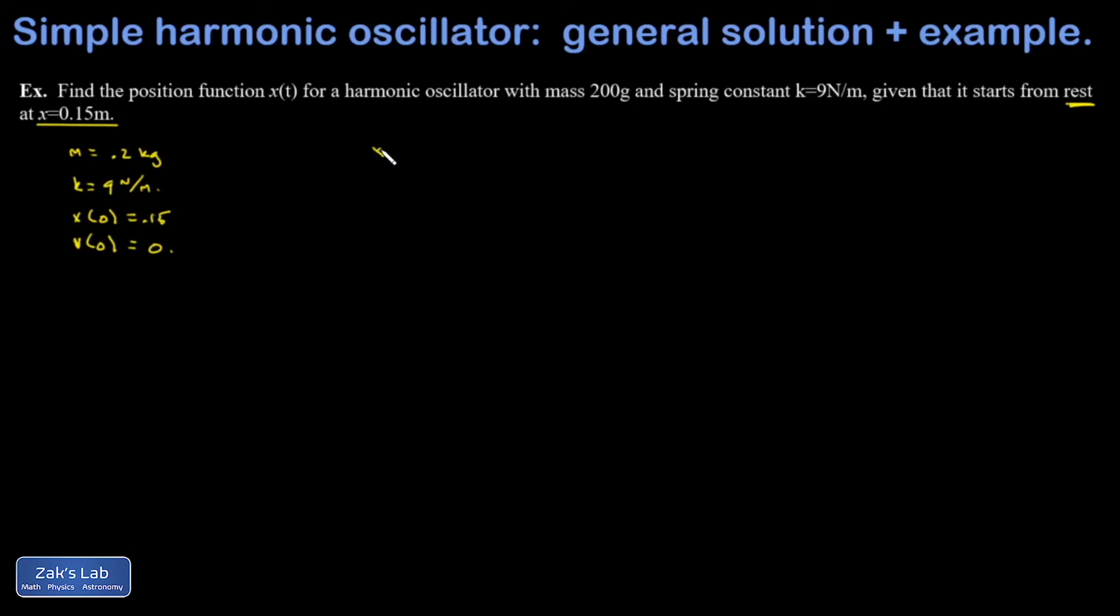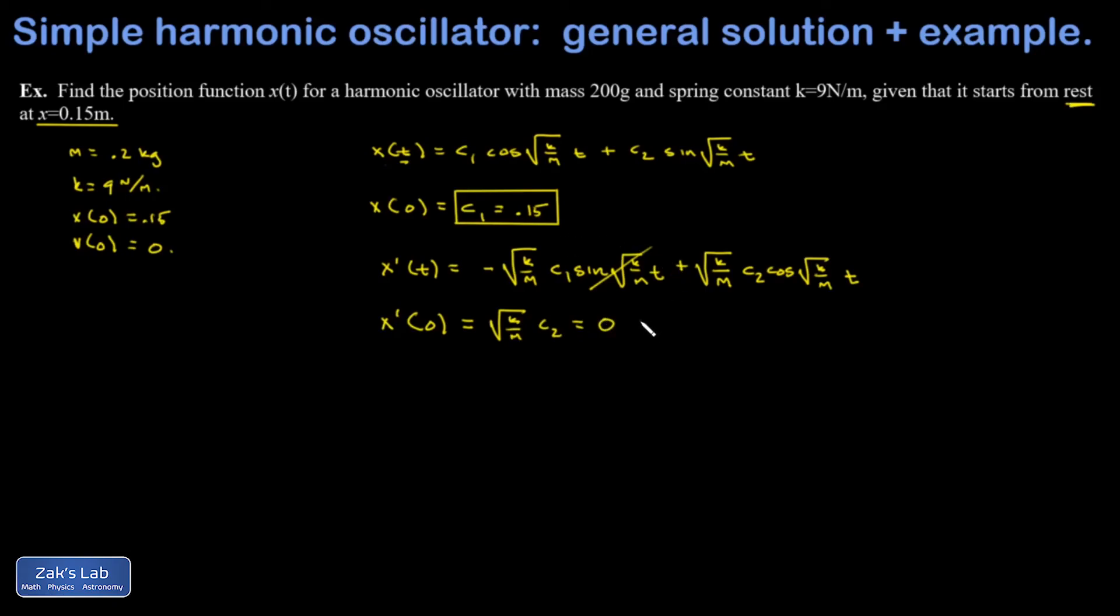We start with the general solution of the harmonic oscillator. And I know x of 0 is 0.15. Well, when I evaluate x at t equals 0, the sine part is going to vanish because the sine of 0 is 0. And the cosine of 0 is 1. So all that survives here is c1, and I immediately have the number for c1, it's 0.15. Now I get ready to apply my second initial condition, but I need an expression for v of t. So that's the first derivative of the position function. When I evaluate this at t equals 0, the sine part is going to vanish. The cosine part gives me 1, and I end up with root k over m c2 is equal to 0, and that means c2 is equal to 0.